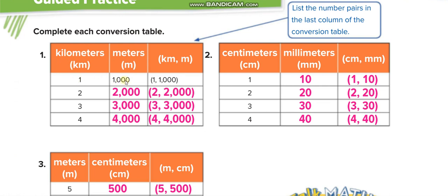Here they are converting in a table: one kilometer equals one thousand meters, two kilometers two thousand, three kilometers three thousand, four kilometers four thousand. You write the kilometers from this column — one, two, three, four — and the meters from here: one thousand, two thousand, three thousand, four thousand.